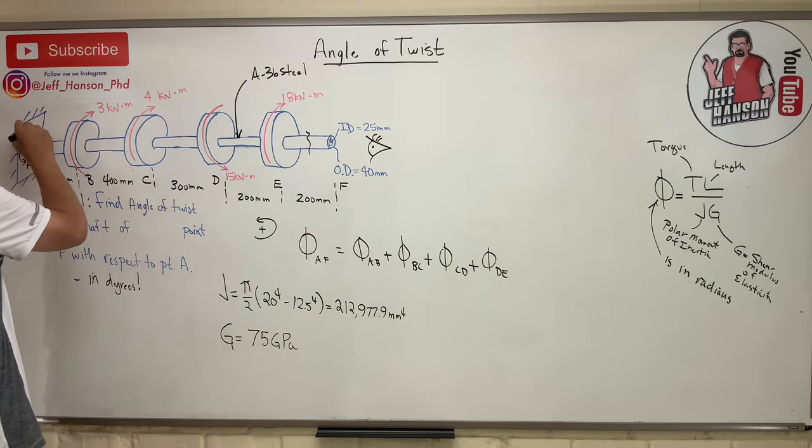So that end rotates quite a bit, but it's got a lot of torque on a relatively thin shaft. Does the angle of twist make sense? I hope this helps and I'll see you in the next video.